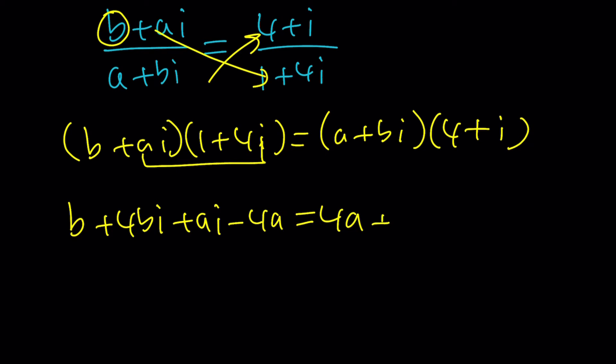And then 4 A plus A I plus 4 B I minus B. Again, I squared is negative 1, right?